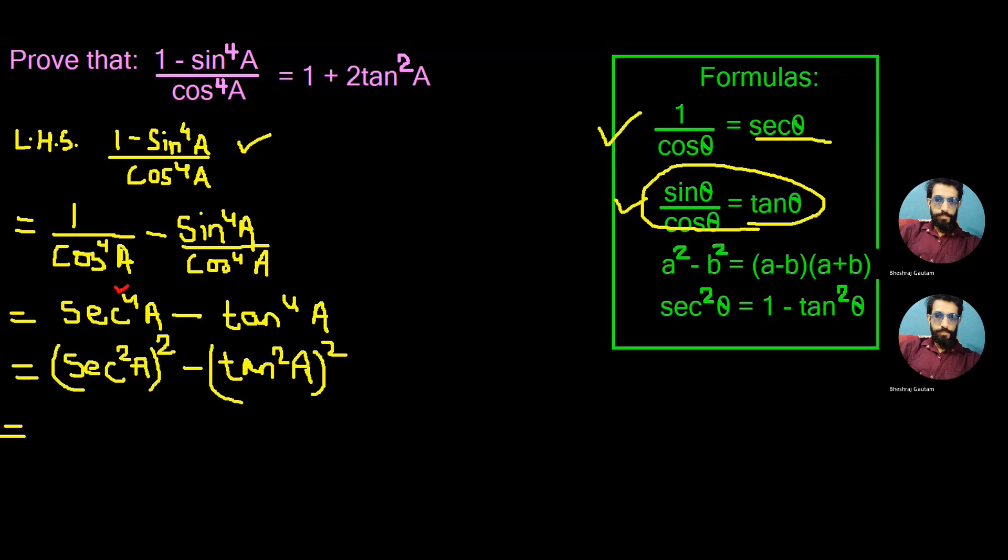Now this can be expressed using the formula a square minus b square equals (a minus b) times (a plus b). Let's do the same here.